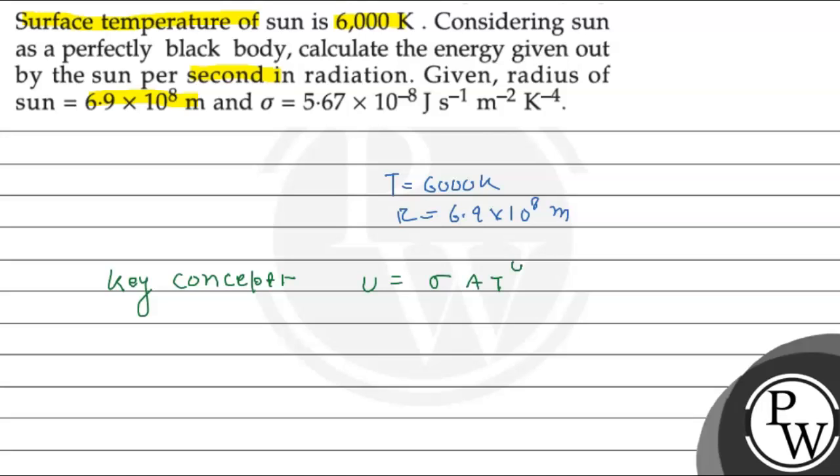Sigma value is given. Area is 4 pi r square, that is 4 pi, r is 6.9 into 10 to the power 8 squared, and temperature given is 6000.